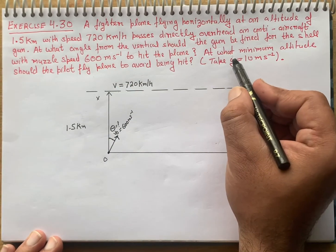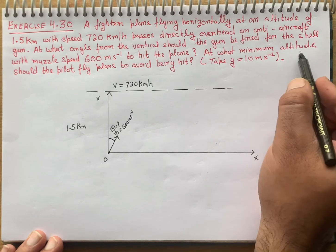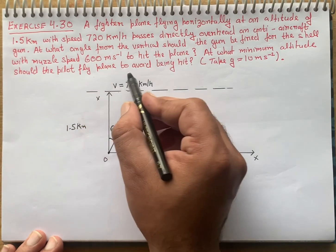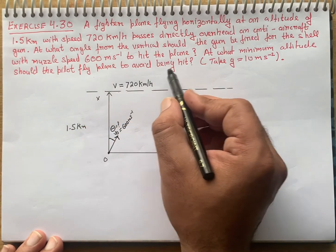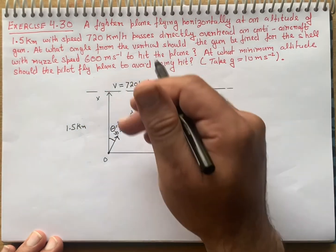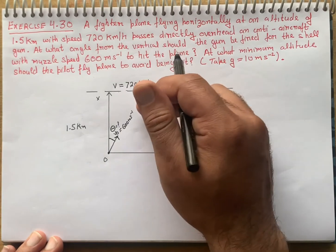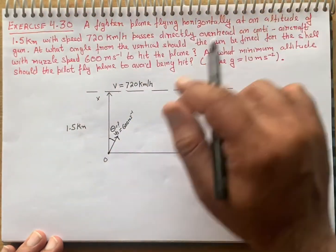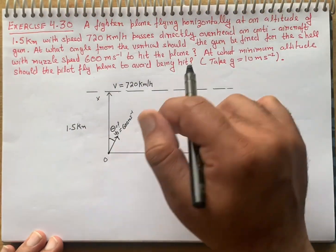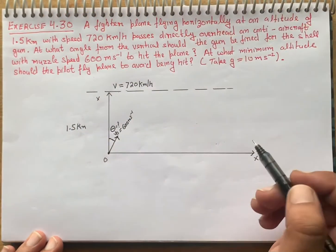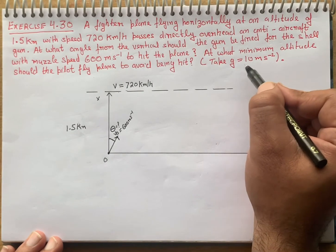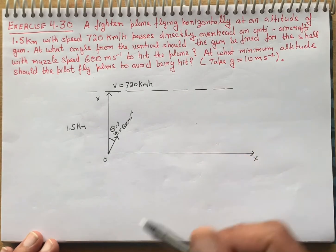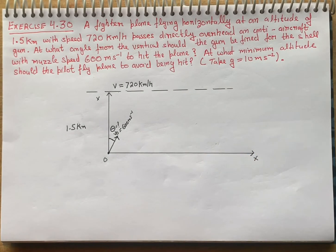The second part of the question asks: at what minimum altitude should the pilot fly the plane to avoid being hit? We will find that as well. Take g equal to 10 meters per second squared. Let's start solving.